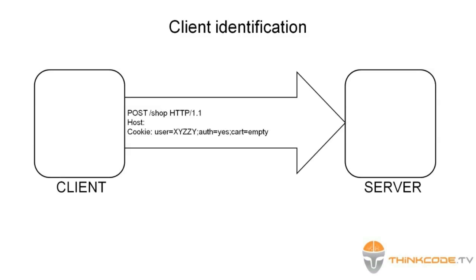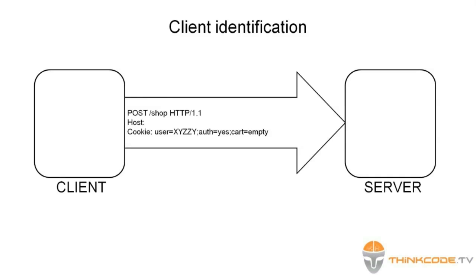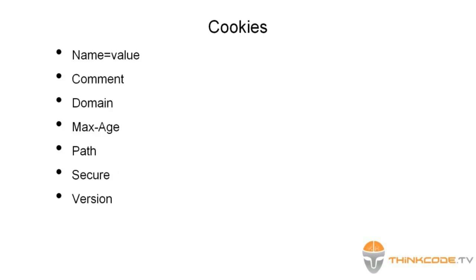For those wondering why cookies are so called, the name comes from fortune cookies — they are similar in that both contain hidden data. To send cookies to clients, servers use the Set-Cookie header; clients instead use the Cookie header in their requests. Cookies are in text format and are structured in name-value pairs separated by semicolons. Every cookie has a name and a value, and they may be followed by a list of predefined attributes including comment, domain, max-age, path, secure, and version.